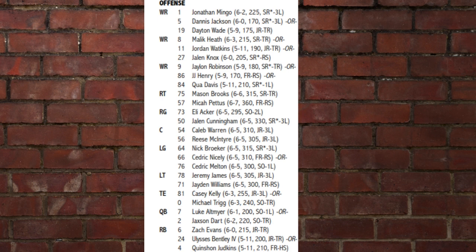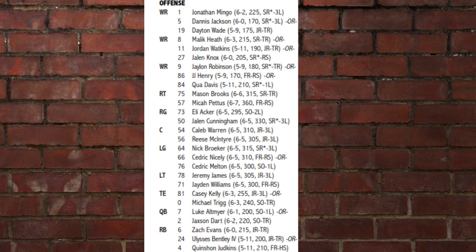Casey Kelly or Michael Trigg starting at tight end. Luke Altmyer or Jackson Dart at quarterback — we knew they would not name a starter, because the opposing coordinator doesn't need to know that information, although we assume it's going to be Jackson Dart. Zach Evans is the starter at running back, then Ulysses Bentley IV and Quinshawn Judkins. Judkins made it on — they took Kincaid Dent off. That is what the offensive depth chart looks like; it doesn't look a whole lot different from the one released this morning.